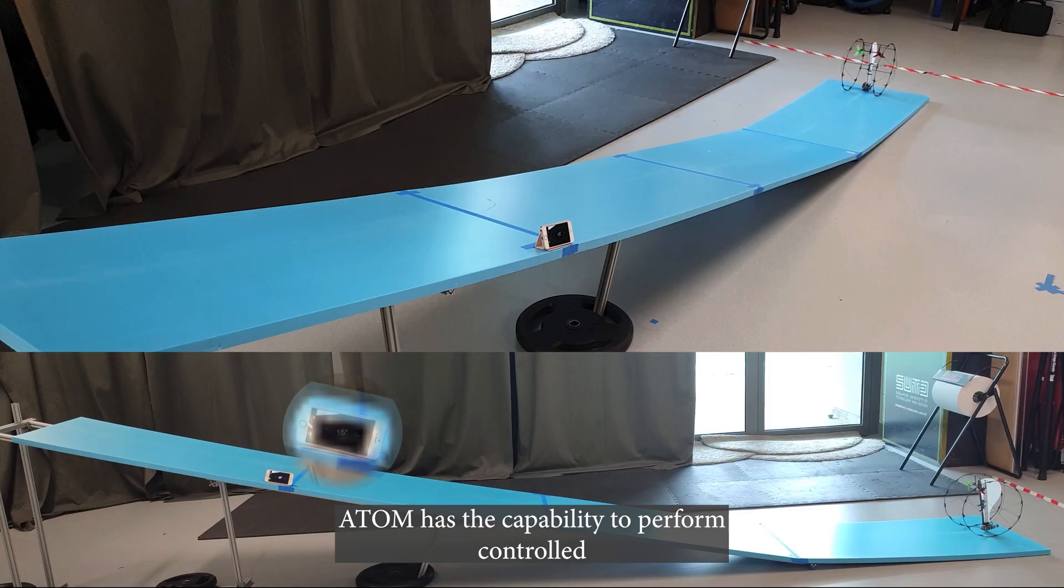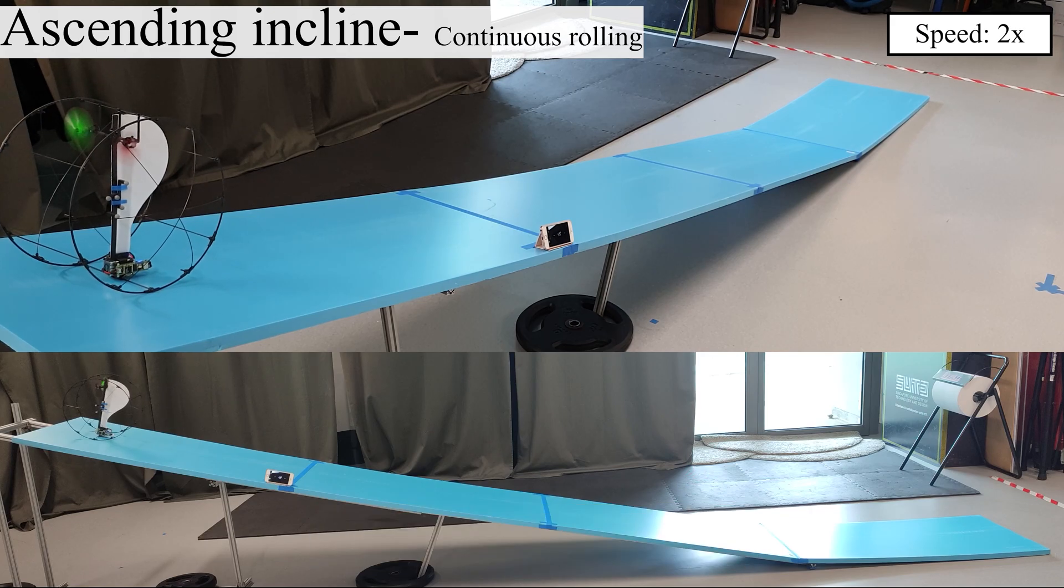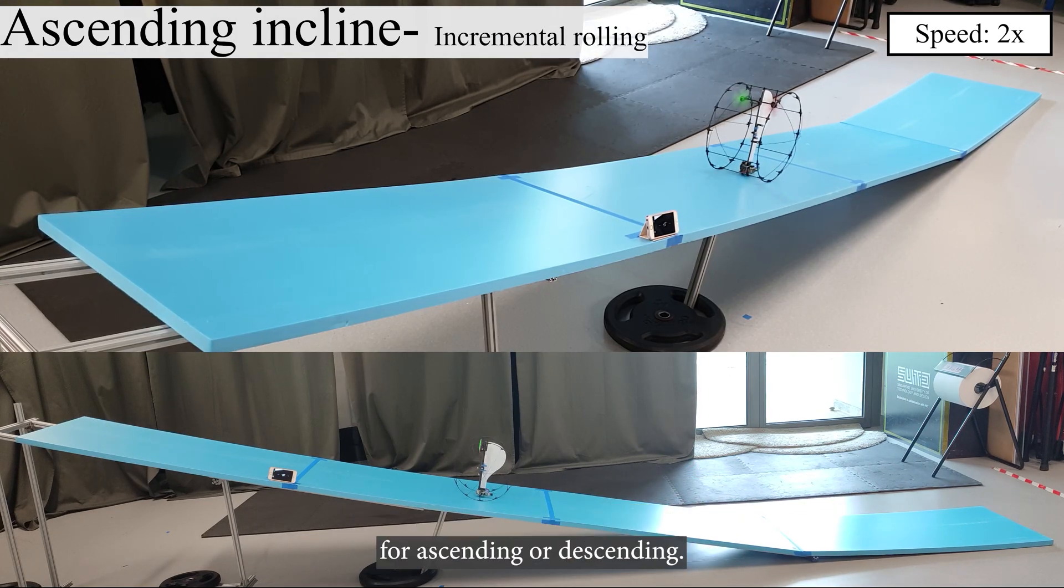Adam has the capability to perform controlled ascents and descents on inclined surfaces with gradients of up to 15 degrees. We can perform both continuous and incremental rolls for ascending or descending.